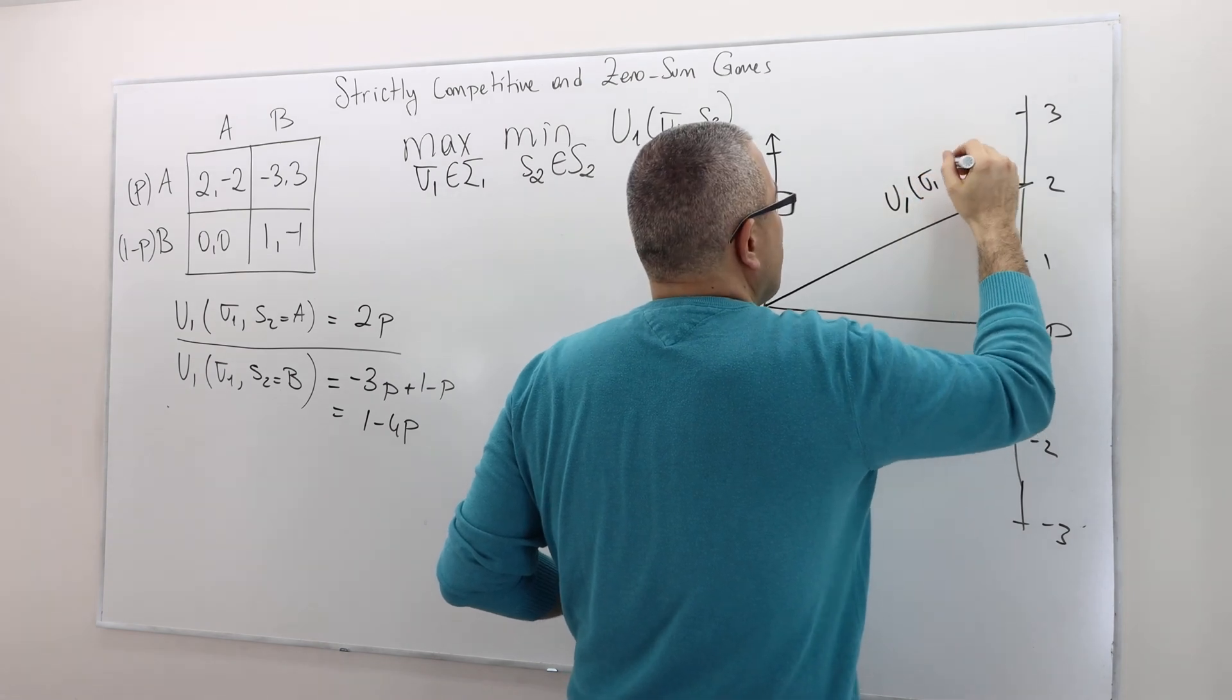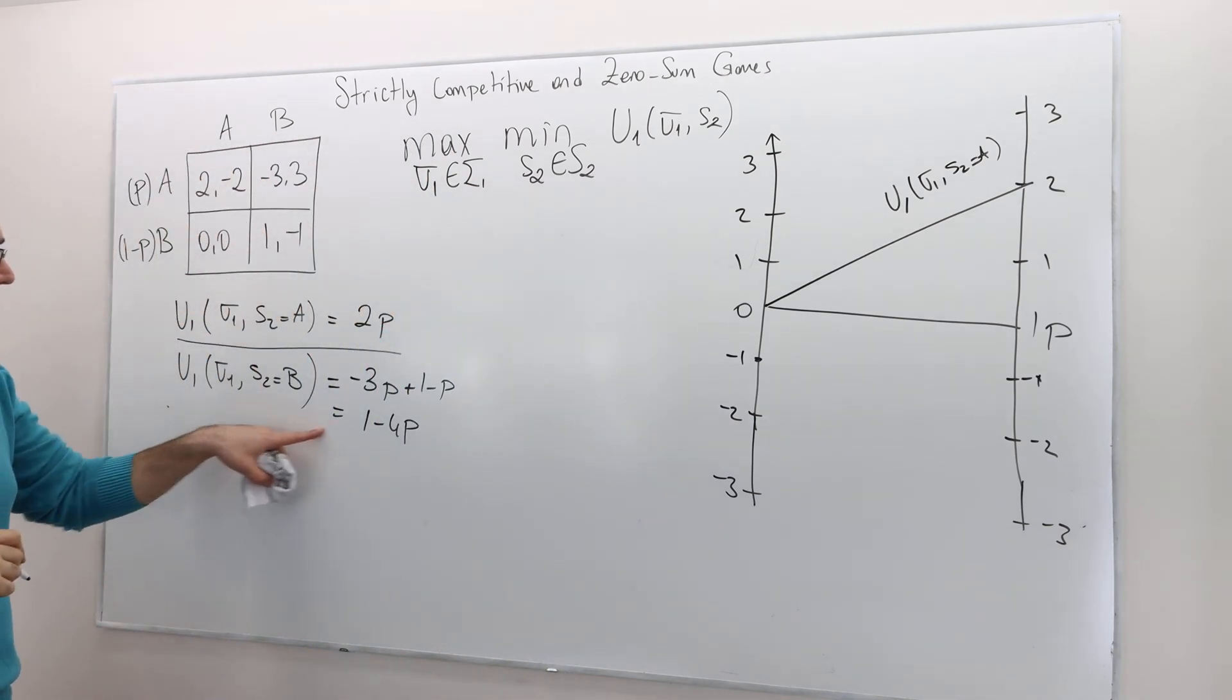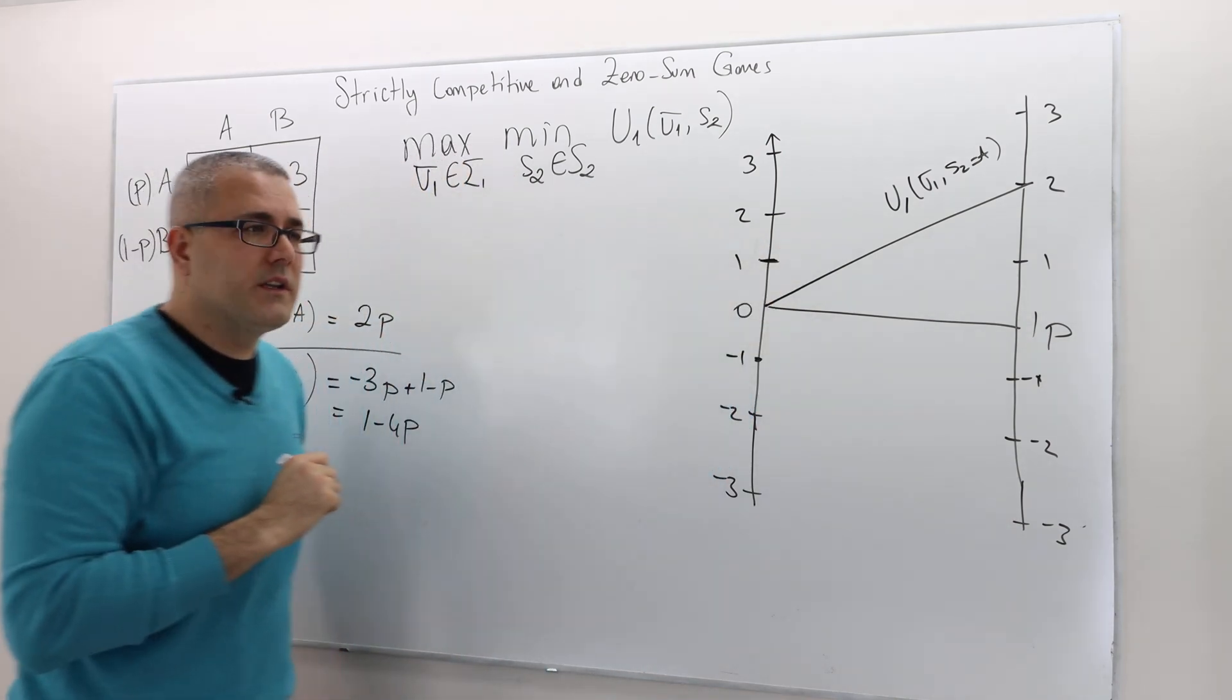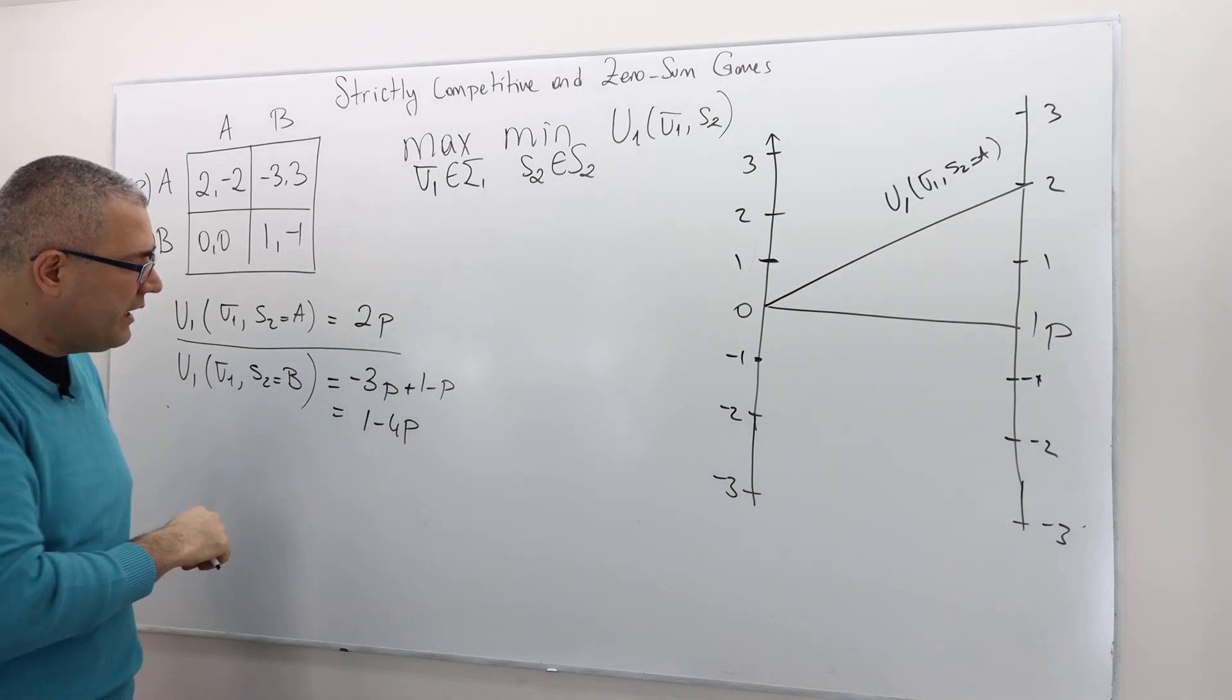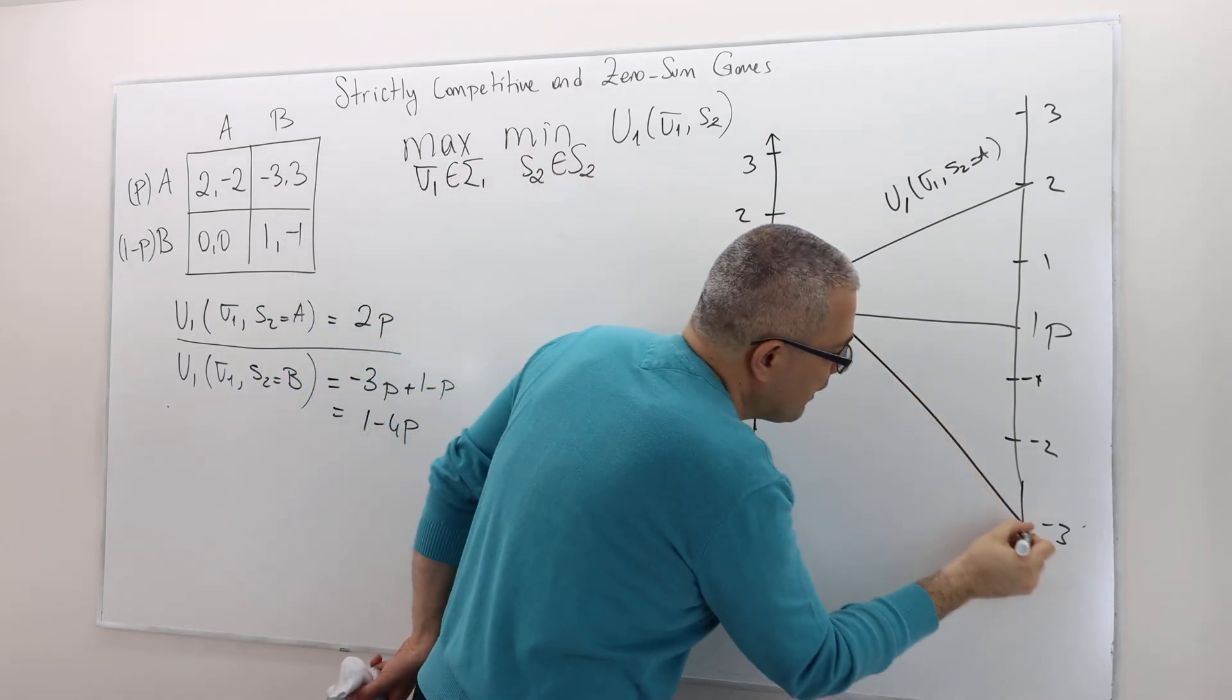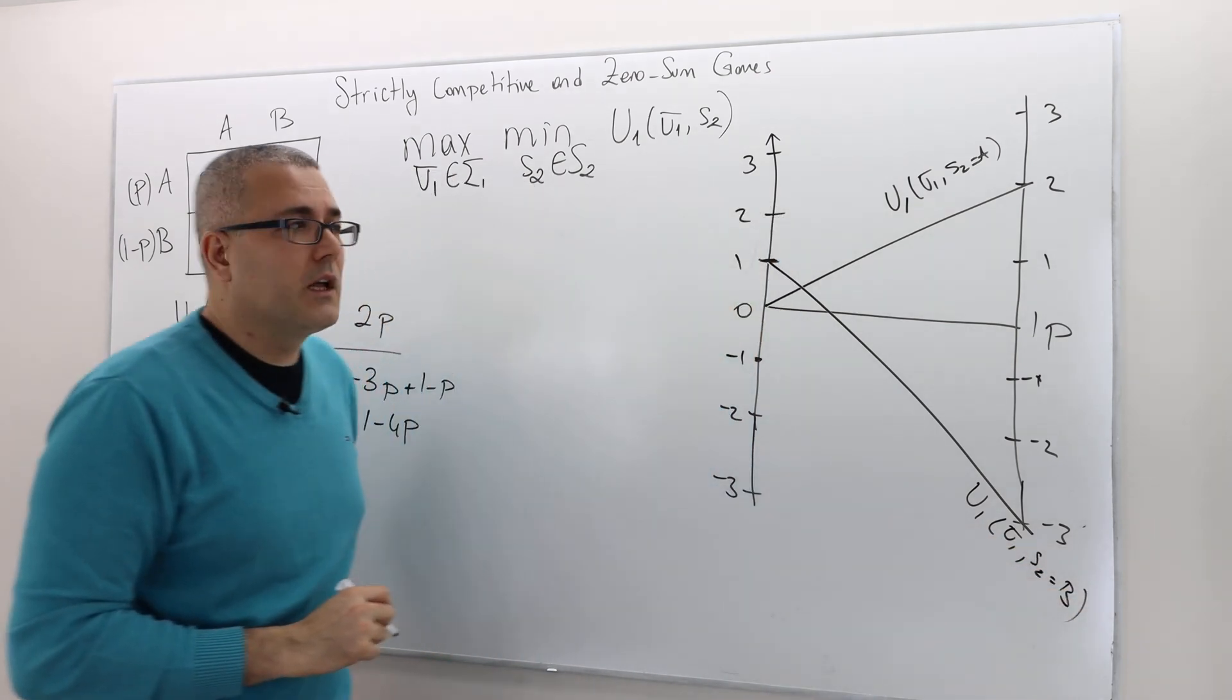So sigma 1, s2 equals A looks like this. Okay? Well, what about this one, 1 minus 4p? So when p is zero, this utility is one. So the starting point is here. It's again a linear function and decreasing with p. When p is equal to 1, this is going to be minus 3. So therefore, this is what U1 sigma 1 s2 equals B graph will look like. Okay? So they're intersecting here. Fine.